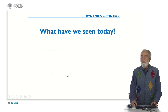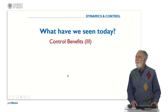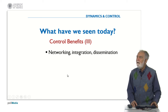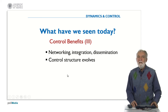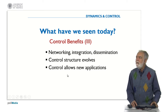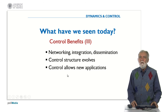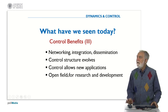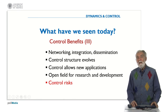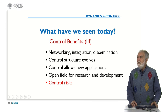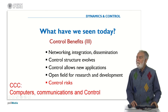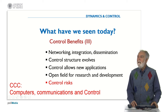What have we seen today? We have seen some extra control benefits mainly because we are developing control systems with networking, integration, and dissemination. Control structures are evolving from single loop to network and embedded control systems, allowing for new control applications and opening the field for research and development. We also saw that there are risks to take into account when designing a control system. As a summary, computers, communications, and control are involved in all these new applications — CCC is the new area of technology for developing new applications.